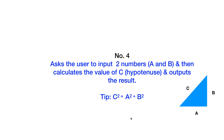Let us write a program for number 4, which asks the user to input two numbers a and b, calculates the value of c which is the hypotenuse, and outputs the result. Obviously here we are talking about a right-angled triangle, where a is the length of one side, b is the length of another side, and c is the hypotenuse. To solve this problem we use Pythagoras' equation: c squared equals a squared plus b squared.